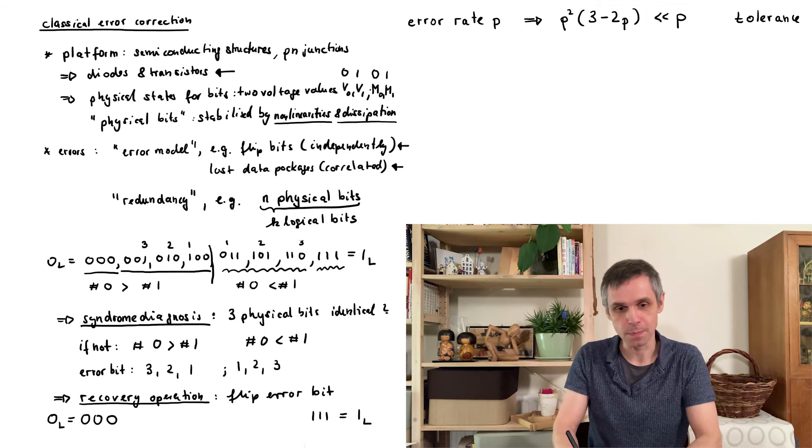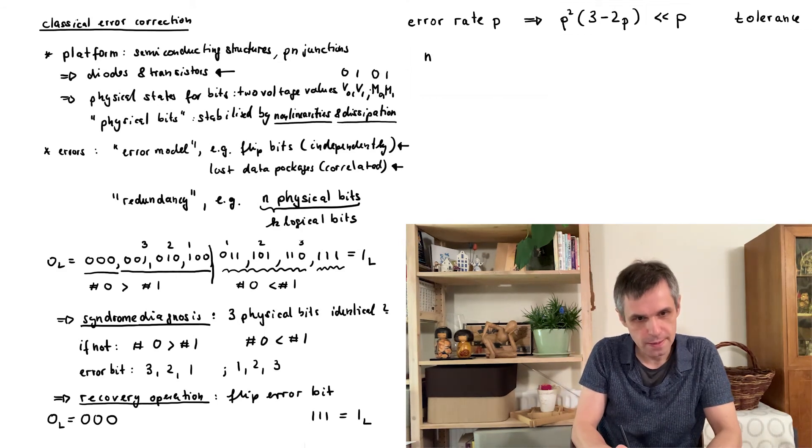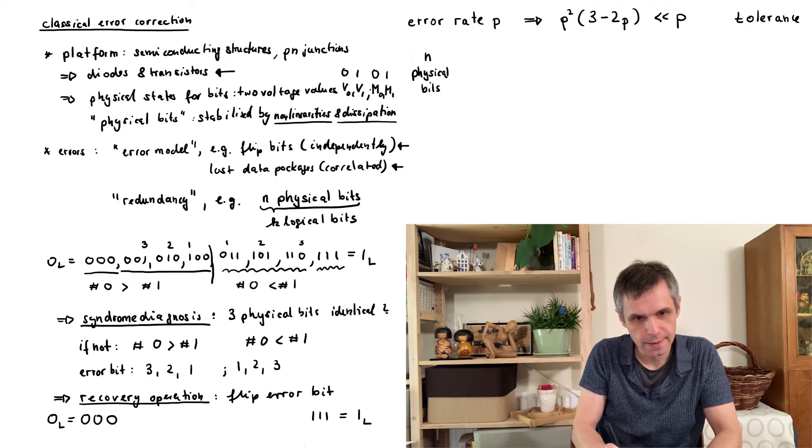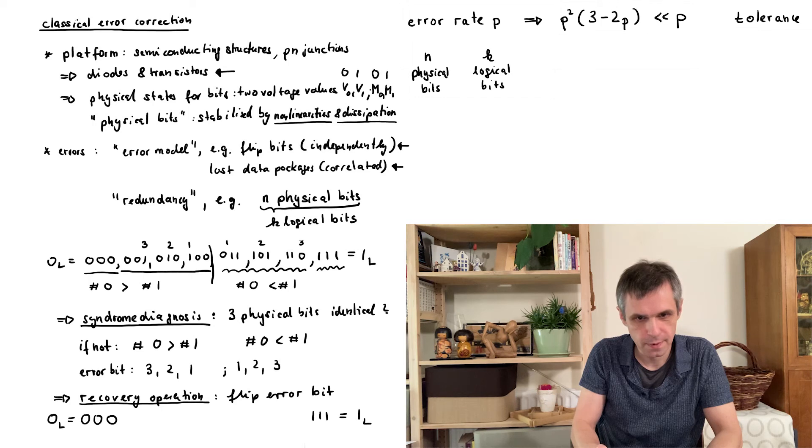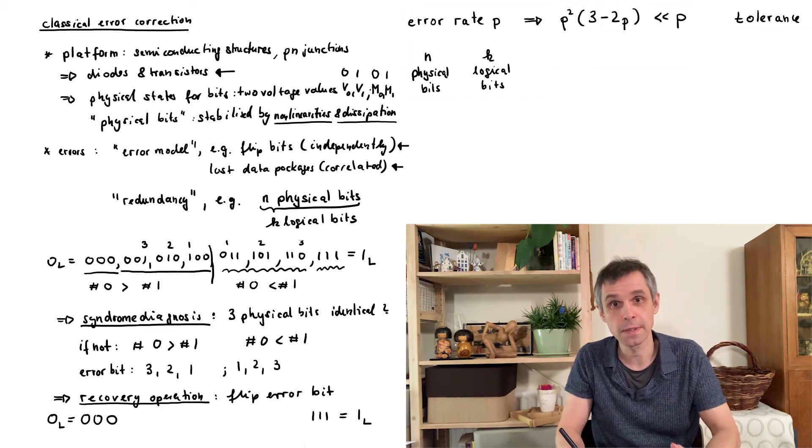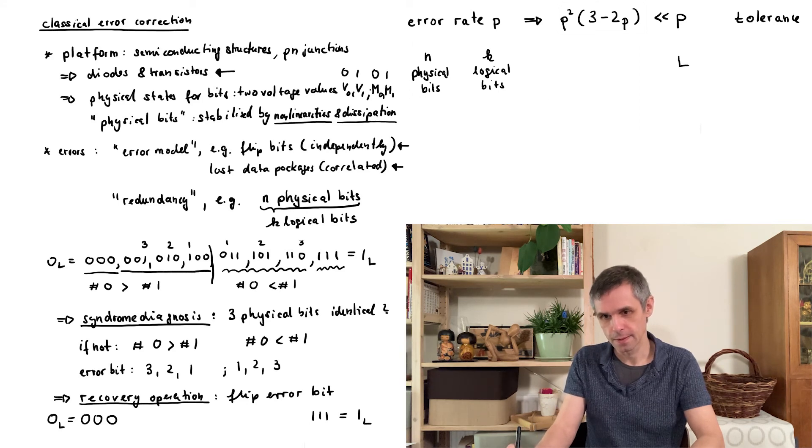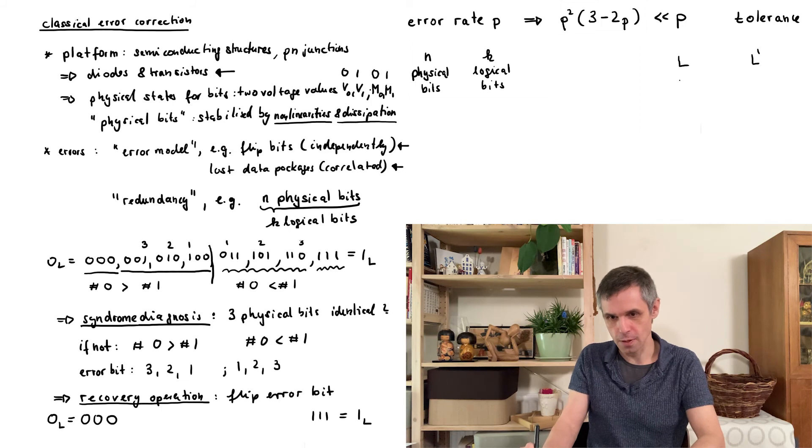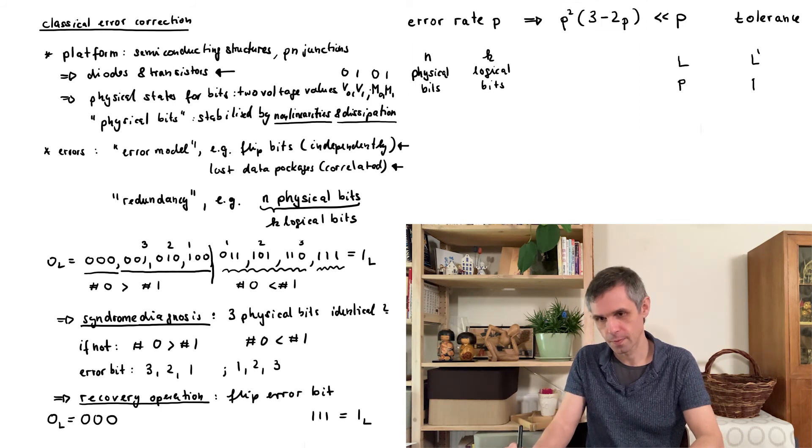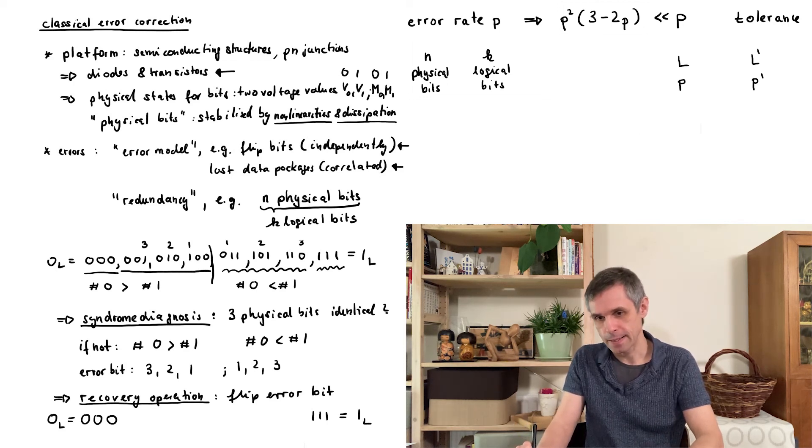In the general case, this is much better. There we have n physical bits and k logical bits. And we can encode these logical bits into the physical bits in many different ways. And the key characteristic of all of these encodings is the following. Say we have two logical bits and the corresponding physical realization. So these physical realizations we interpret as the state of these logical bits without any errors.